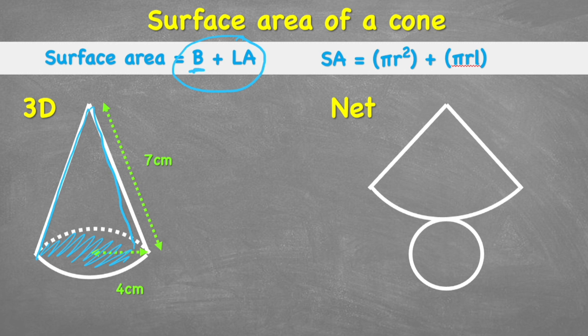When we're finding the surface area, essentially what we're doing is trying to work out the area of the skin, if you like, around this shape. Sometimes it's easier to see that skin when we lay out our shape into its 2D net. So you can see here we have that cone shape unfolded, and then we have the circular base.